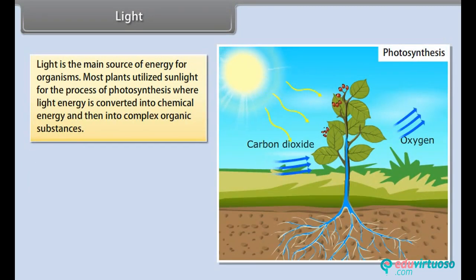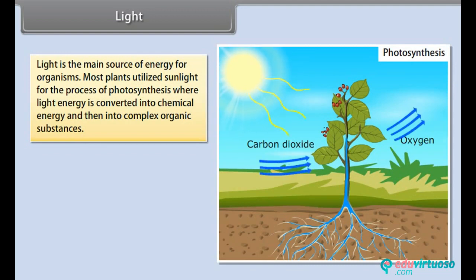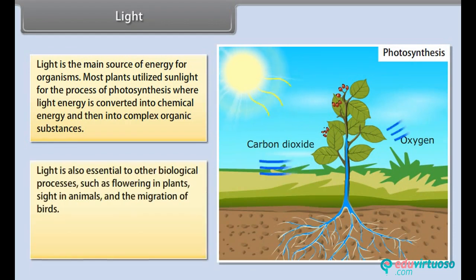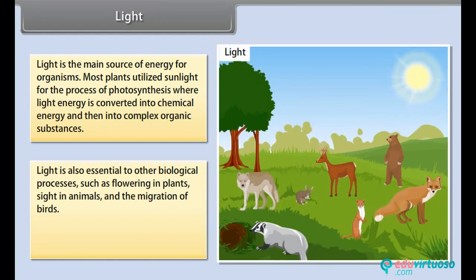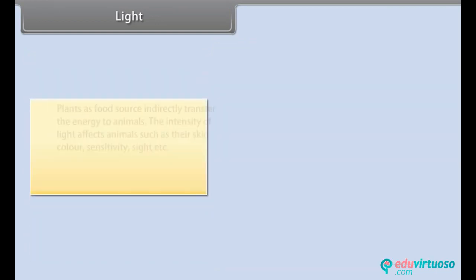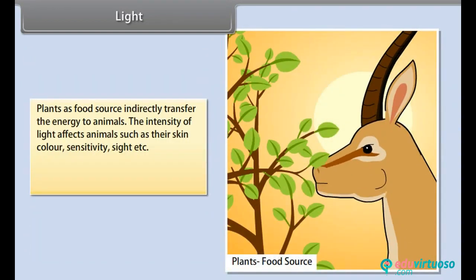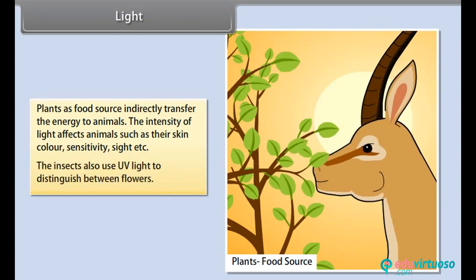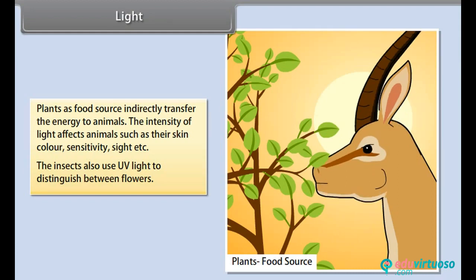Light: Light is the main source of energy for organisms. Most plants utilize sunlight for the process of photosynthesis, where light energy is converted into chemical energy and then into complex organic substances. Light is also essential to other biological processes such as flowering in plants, sight in animals, and the migration of birds. The production of food and oxygen both depend on light. Plants as a food source indirectly transfer energy to animals. The intensity of light affects animals such as their skin color, sensitivity, and sight. Insects also use UV light to distinguish between flowers.